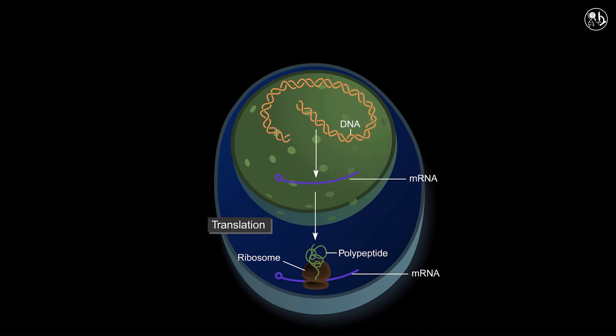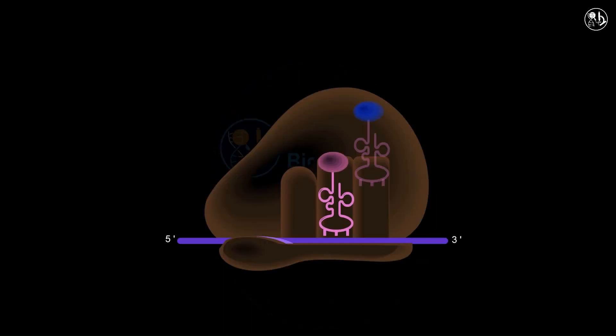Translation is the process whereby the base sequence of a messenger RNA or mRNA is converted into amino acid sequence of a protein. This process requires mRNA, tRNAs, amino acids, a ribosome and other accessory proteins.